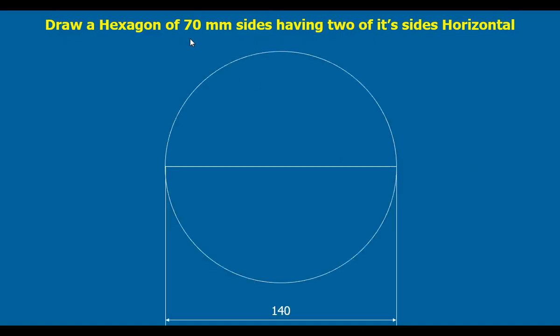This is a 70mm sides hexagon. We draw a circle of 70mm radius, that is 140mm diameter. Because we want the two sides horizontal, I have taken a diameter line horizontally.